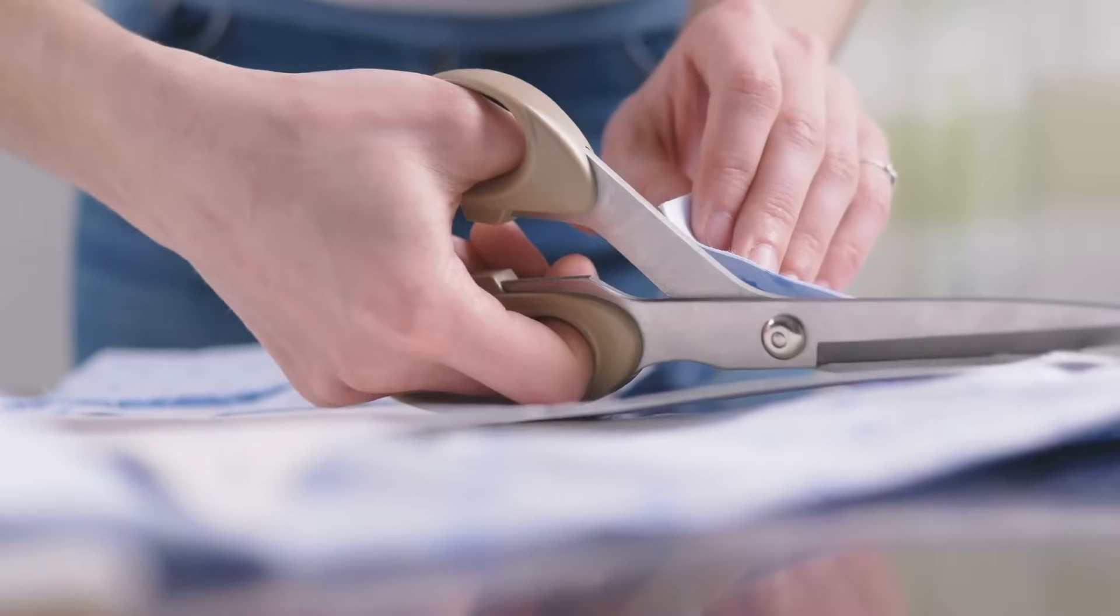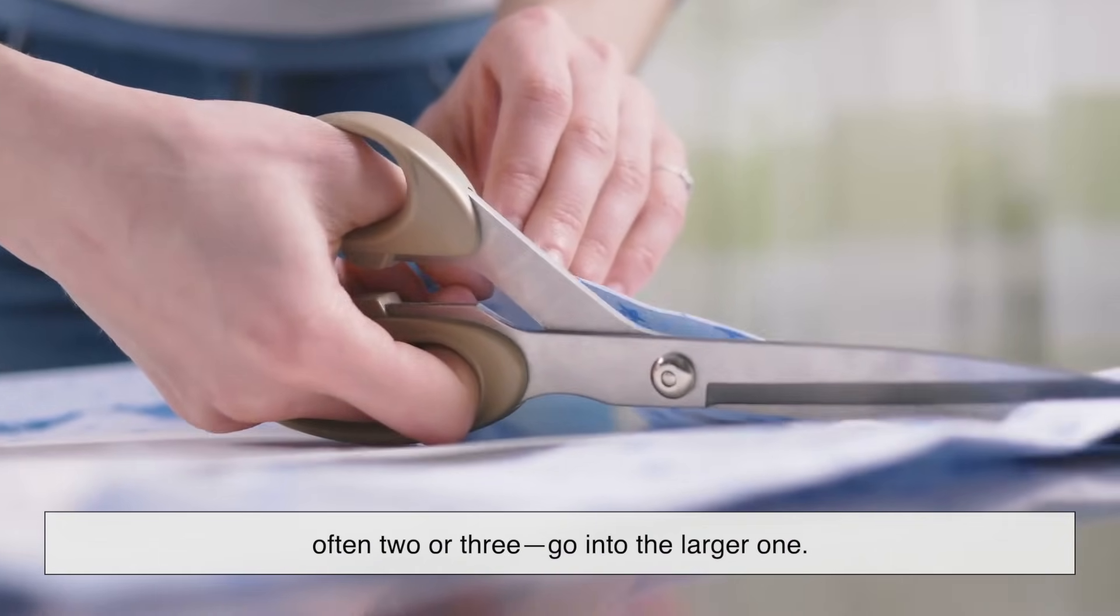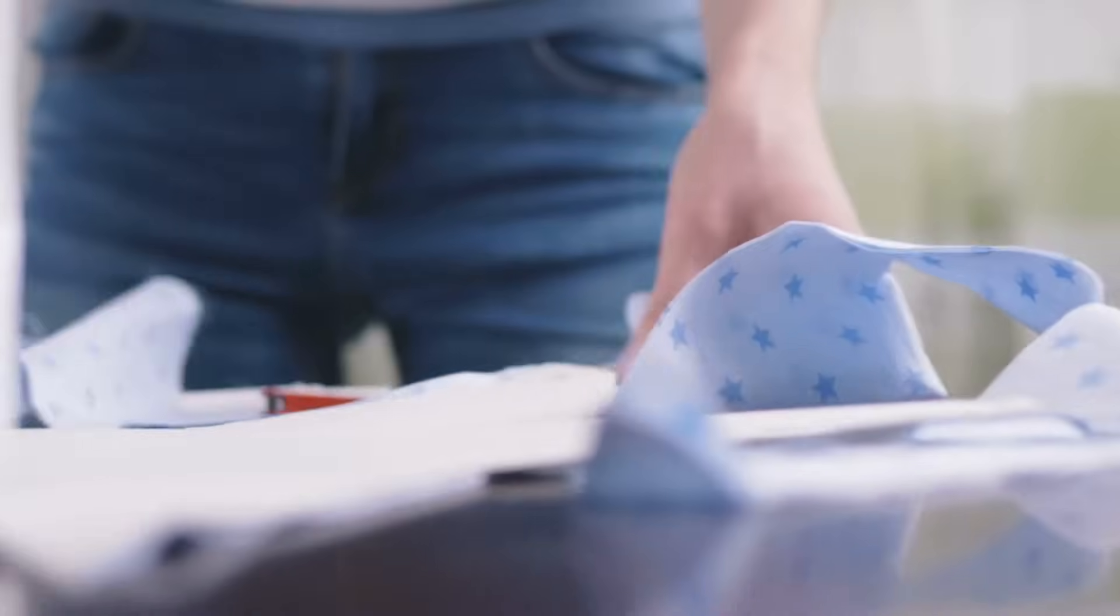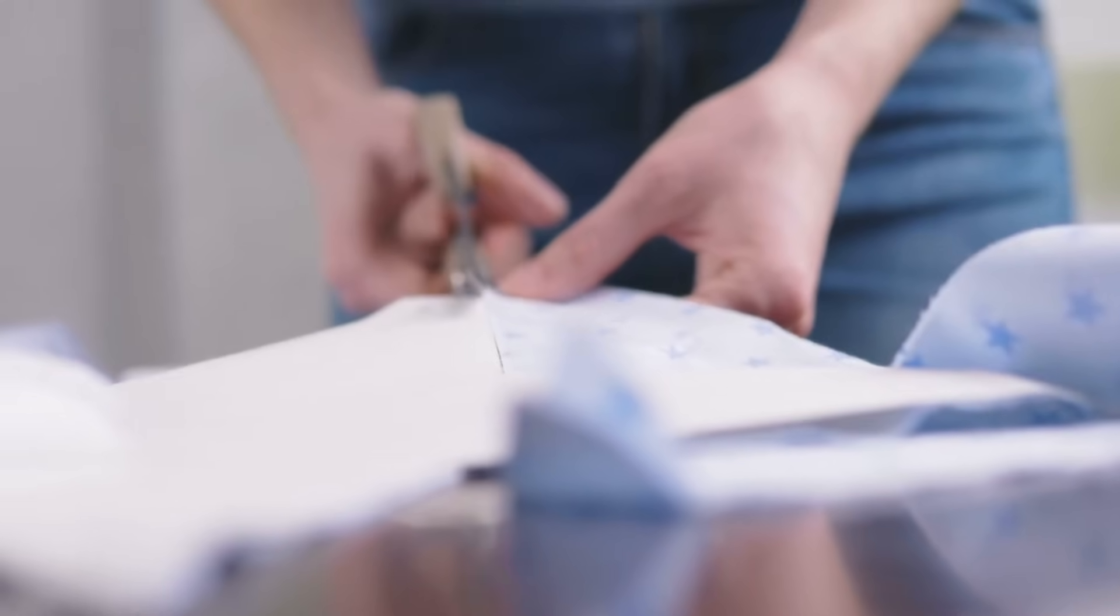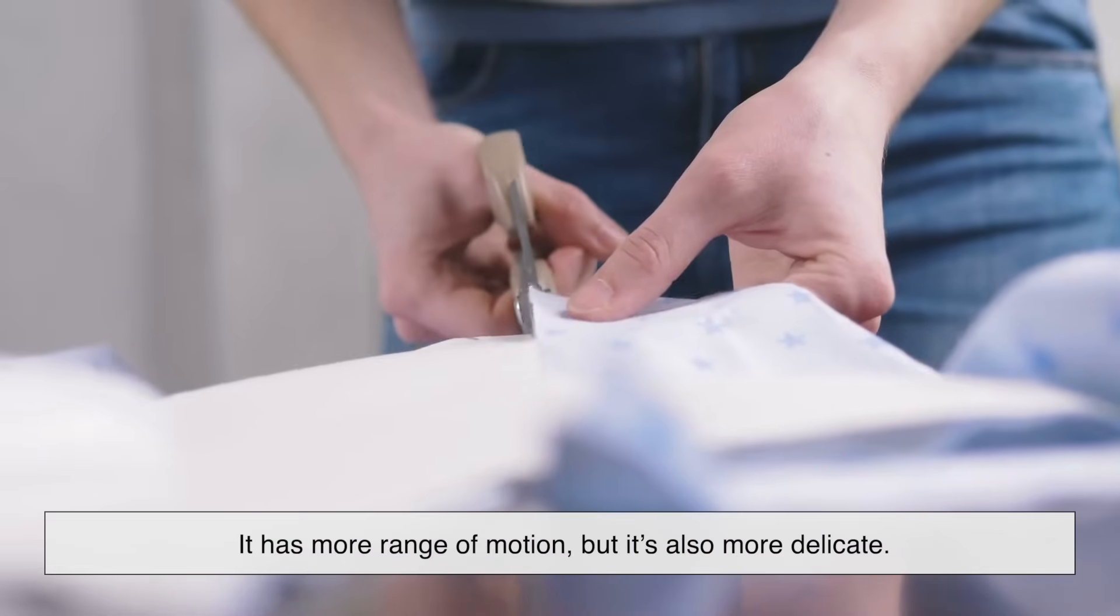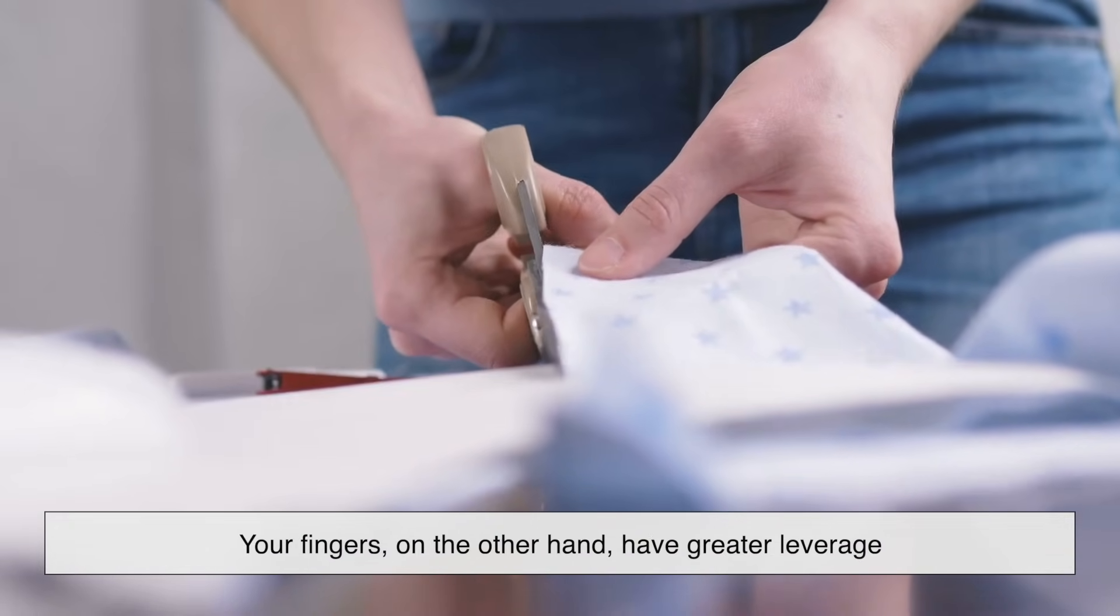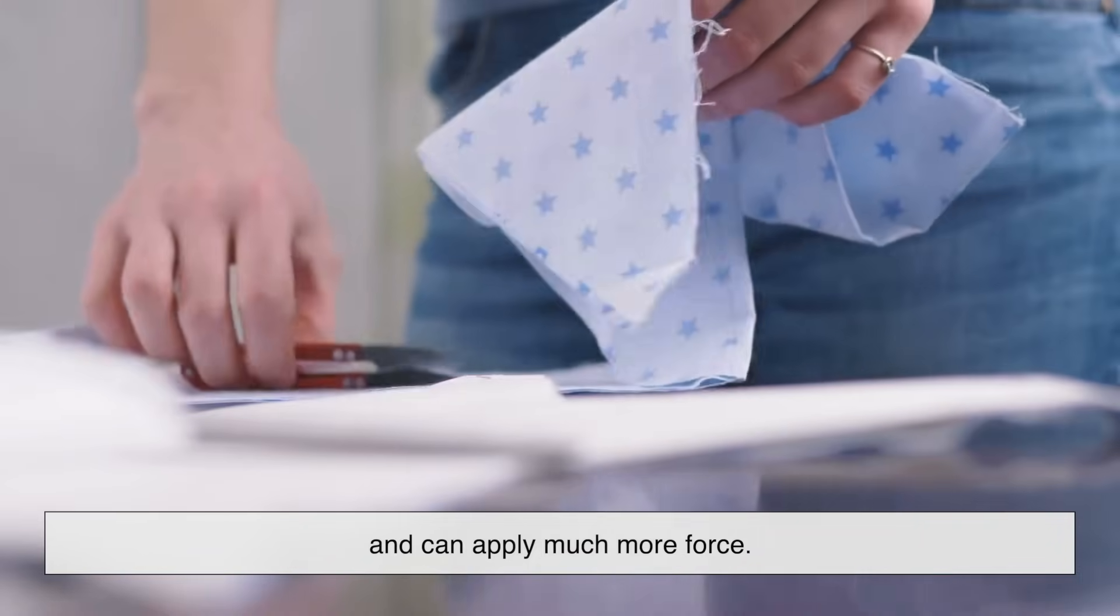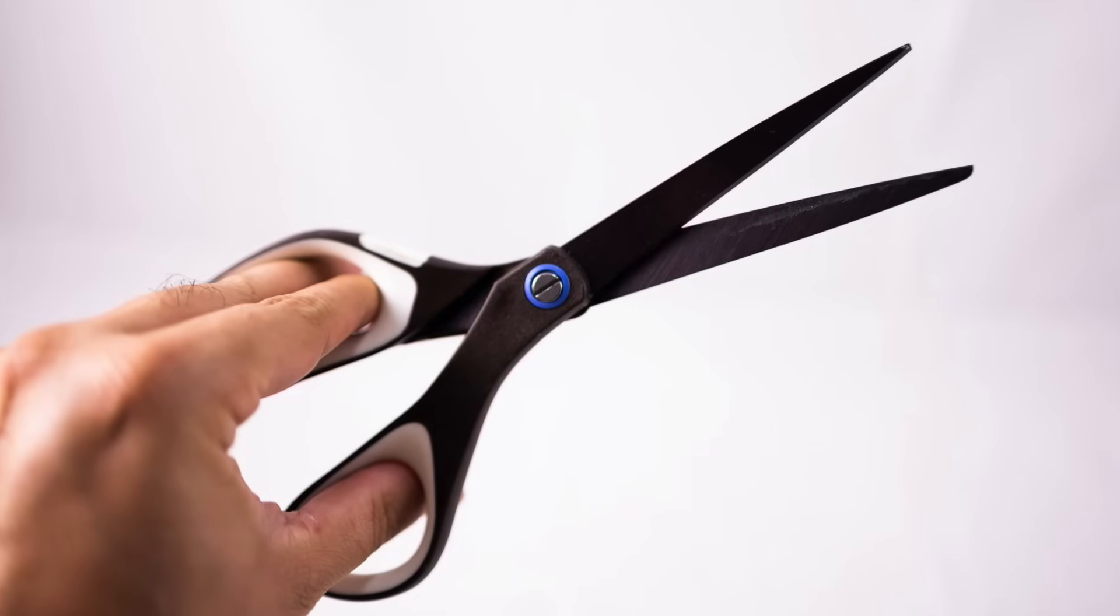When you use scissors, your thumb goes through the smaller loop, and your fingers, often two or three, go into the larger one. Think about that for a second. Your thumb moves in a very different way than your fingers do. It has more range of motion, but it's also more delicate. Your fingers, on the other hand, have greater leverage and can apply much more force.